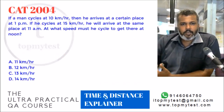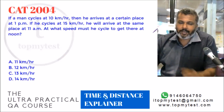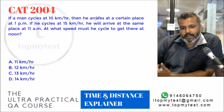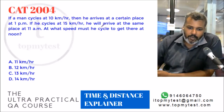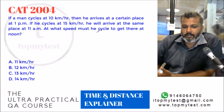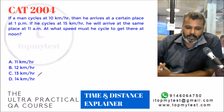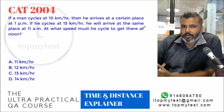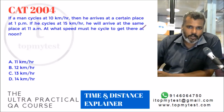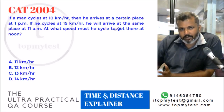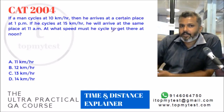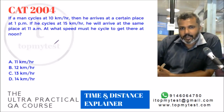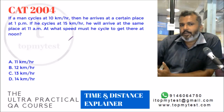Now let's look at a problem you will have seen in multiple texts. This came up in CAT 2004. It says: if a man cycles at 10 km/h he arrives at a certain place at 1 PM; if he cycles at 15 km/h he arrives at 11 AM. At what speed must he cycle to get there at noon? Options are 11, 12, 13, and 14 km/h. Two things not explicitly stated but required to solve: he takes the same route, so the distance is the same in each case, and he starts at the same time in all three cases.